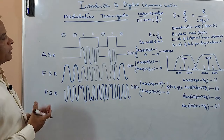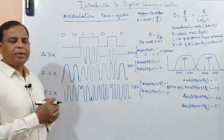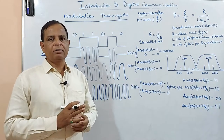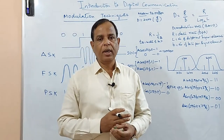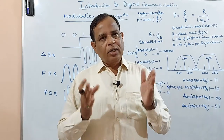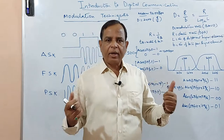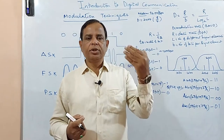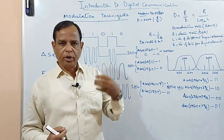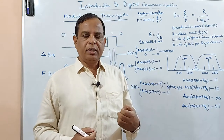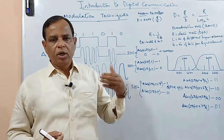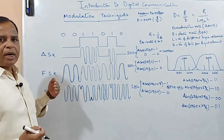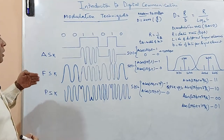Now let us see what are the different modulation techniques available to represent a digital signal into analog form. As we have discussed in the modulation topic, as far as analog modulation is concerned, modulation is nothing but we have a carrier frequency. It has three parameters: amplitude, frequency, and phase. We are using these parameters to represent the modulating signal. Now let us see how these binary bits are being represented using one of those parameters in the carrier.